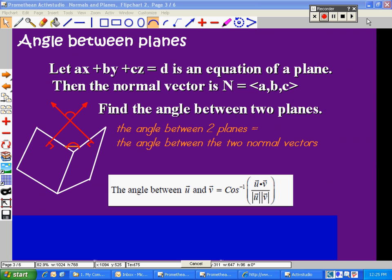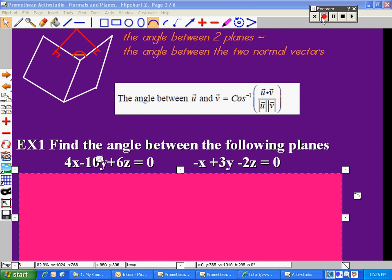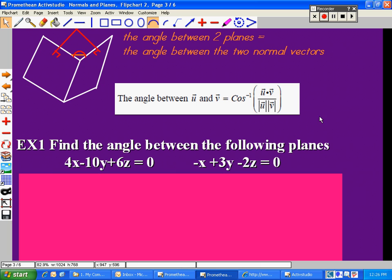So let's do an example. Here's example one: Find the angle between the following planes. They give you two equations for the planes. Can you find the normal vectors? Because we need the normal vectors to find the angle between them. That will give us the angle between the two planes. So what are the normal vectors? Remember the first thing that we wrote down in our notes today.